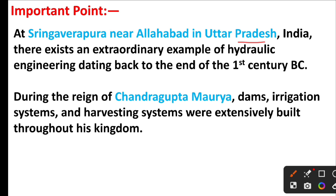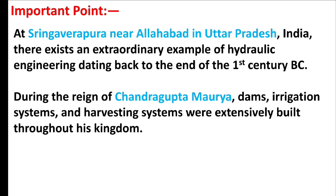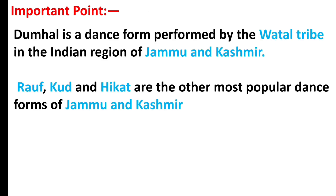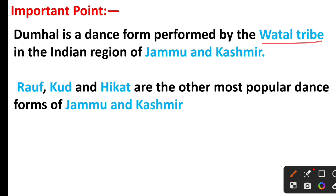Which place had a water harvesting system channeling the flood water of the Ganga River in the first century BC? The right answer is option D — Sringaverapura. At Sringaverapura, near Allahabad in Uttar Pradesh, there exists an extraordinary example of hydraulic engineering dating back to the end of the first century BC. During the reign of Chandragupta Maurya, dams, irrigation systems, and harvesting systems were extensively built throughout his kingdom.